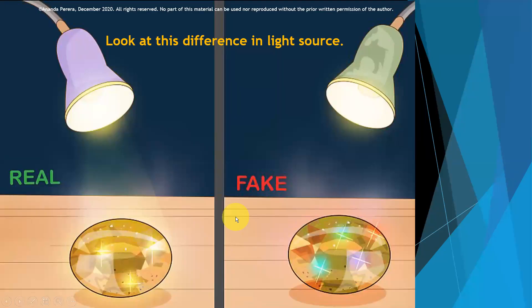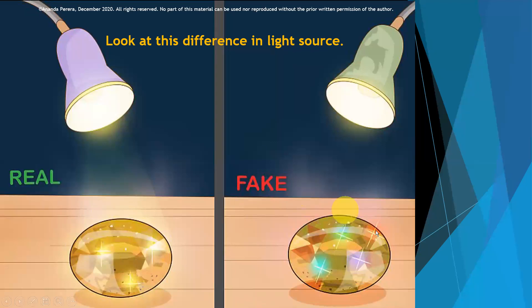Here is another experiment. Look at the difference in the light source. When we use a light source to view the stone, the real natural stone glows one way and the fake synthetic one glows differently. See the difference — we can recognize it is synthetic.